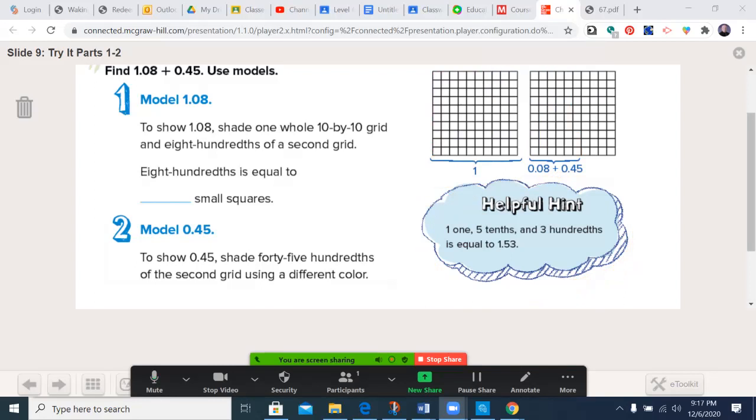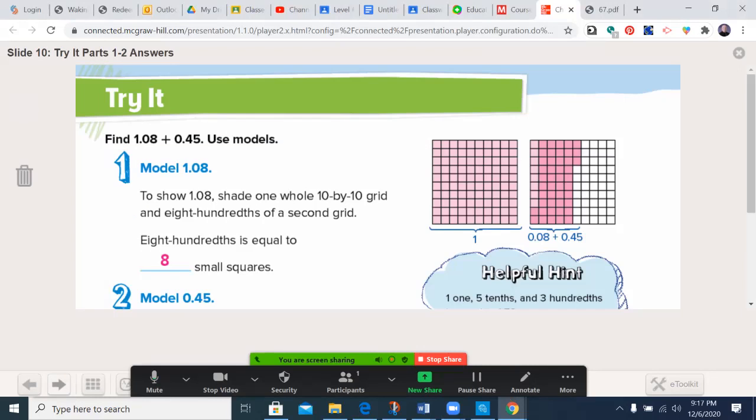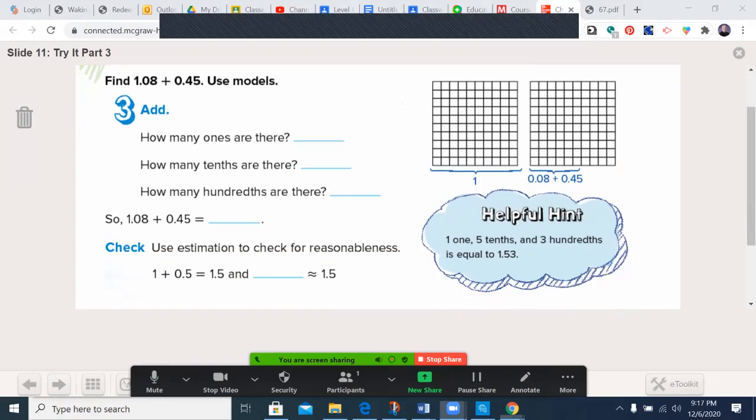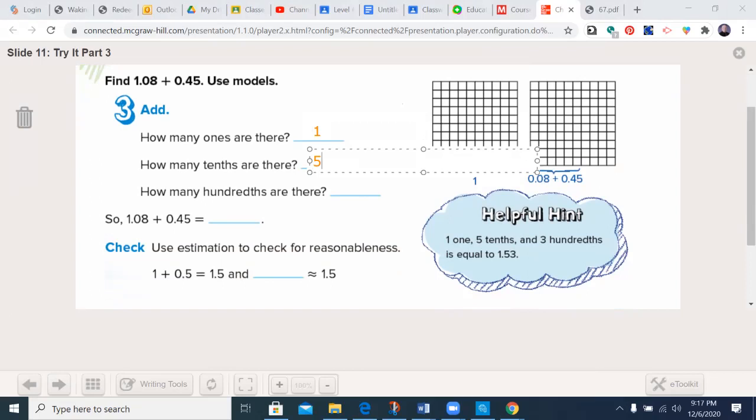Otherwise, we're going to move forward. And I'm going to keep that drawing in mind. Let's refill this one. How many whole ones were there? There was one whole one. How many tenths? That's the full columns. That was five. How many hundredths did we have? Three. So the answer to this is 1.53.